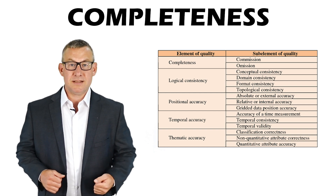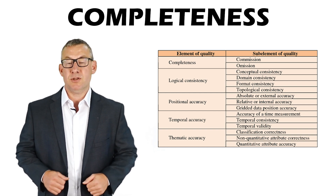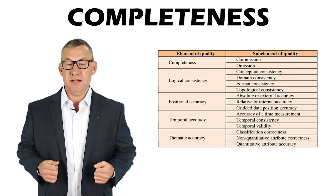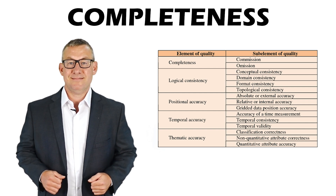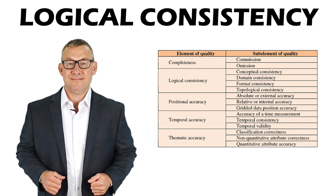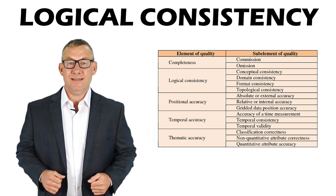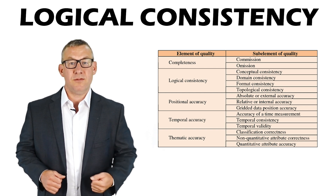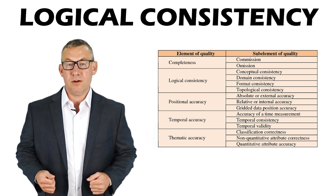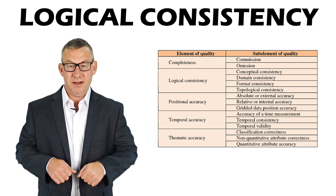Completeness is how well a data set captures all the information it is intended to represent. Logical consistency is how well data from different data sources or layers are integrated.